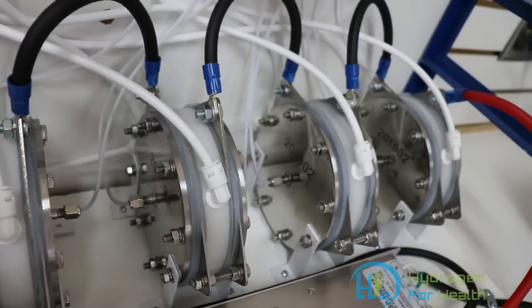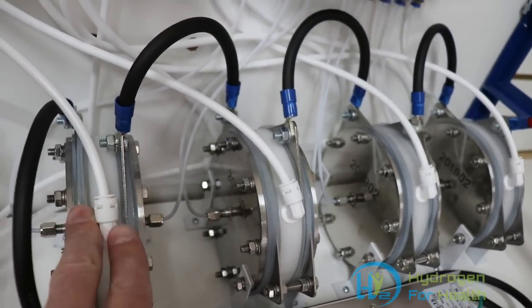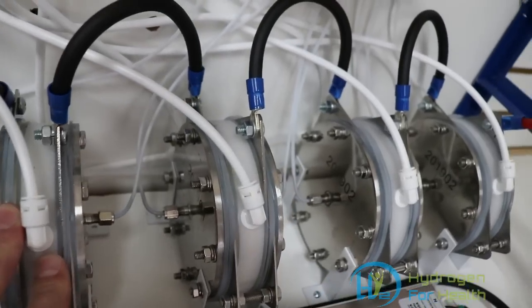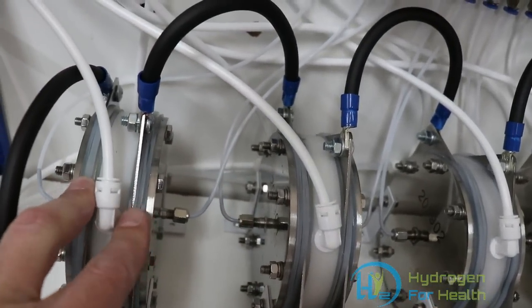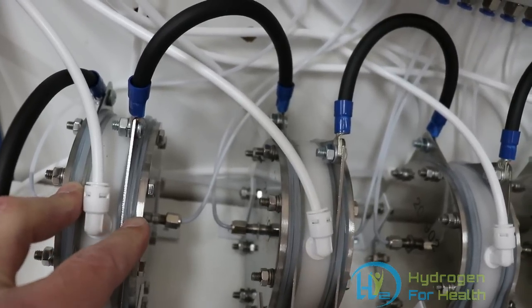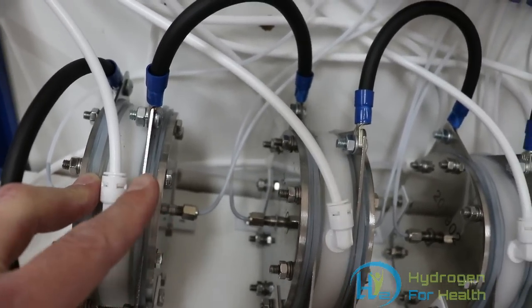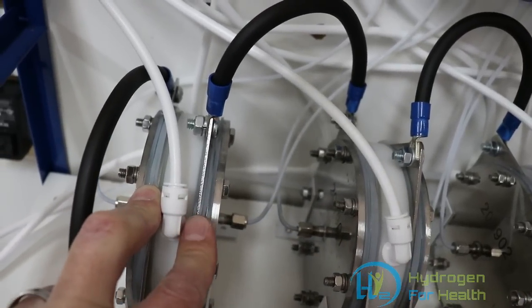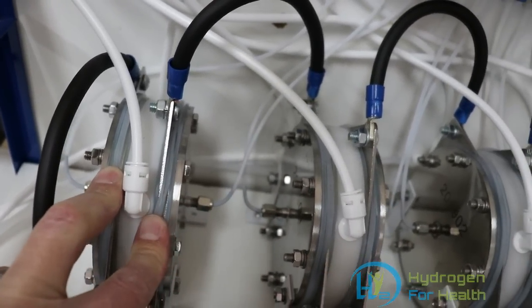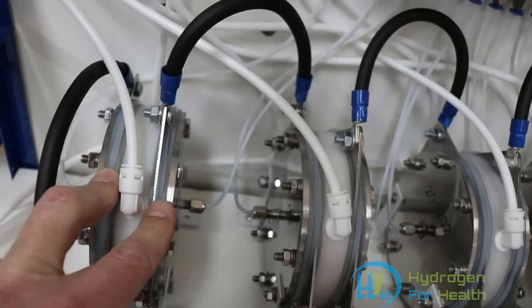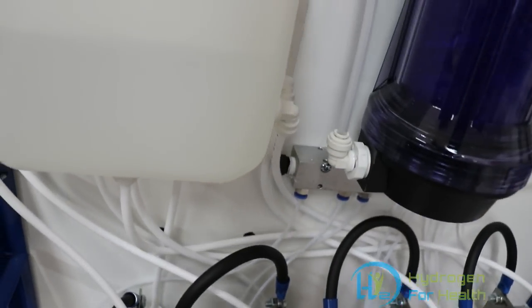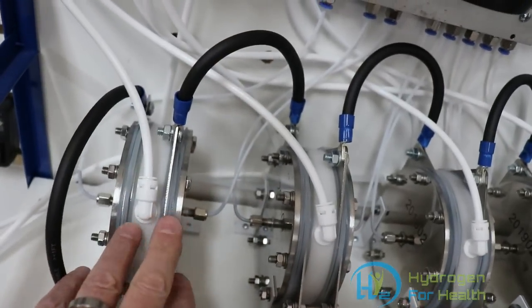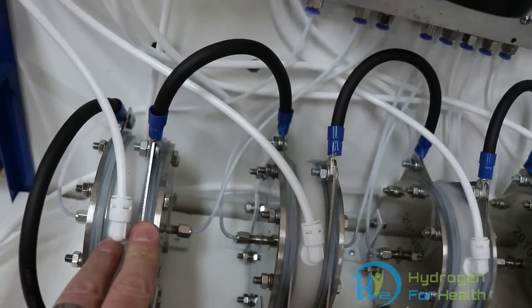Quickly, I'll tell you about the generators. The generators are a PEM style generator, which means that they have basically a positive and negative plate. In between that plate there's a membrane. On the membrane, it's coated with platinum, and the platinum acts as the catalyst to make the process work. So this is using distilled water. There's no additives in the water. The catalyst is on the membrane in between the plates.